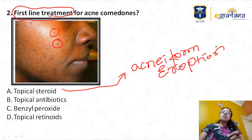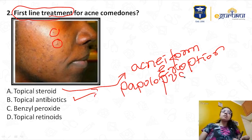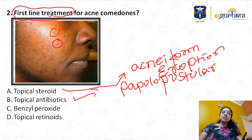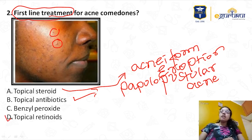The options are: topical steroid, topical antibiotics, benzoyl peroxide, and topical retinoids. Topical steroid is itself a cause of acne — it can induce acneform eruptions, so it is not the drug of choice. Topical antibiotics are mainly indicated in papulopustular acne, not first-line for comedonal. Benzoyl peroxide can be used but is not first-line. The correct option is topical retinoids.